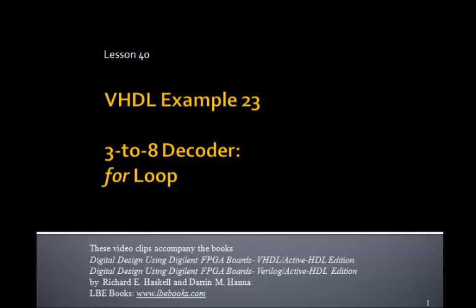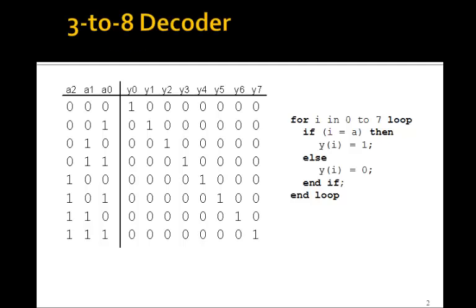This is Lesson 40, VHDL Example 23. In this example, we'll design the same 3-to-8 decoder we did in Lesson 39, except that instead of using logic equations, we'll use a VHDL for loop. Let's see how we can do that.